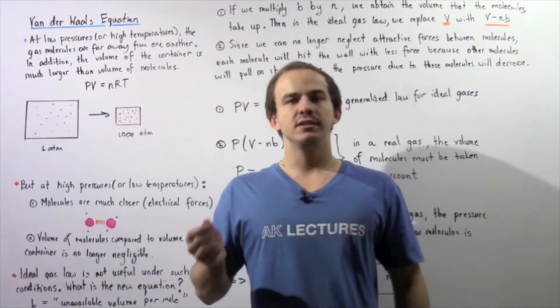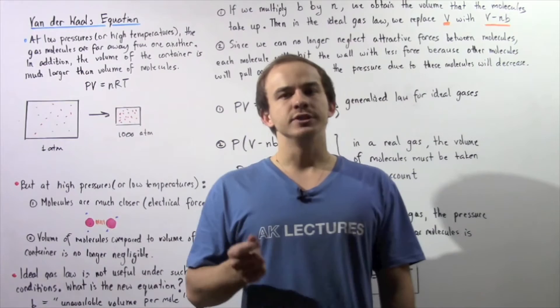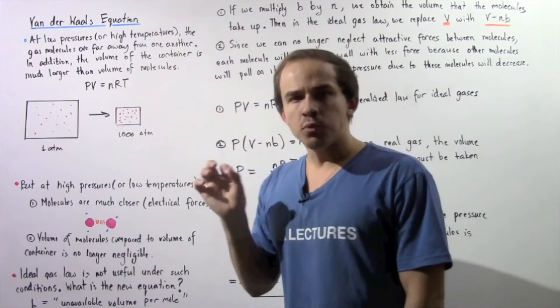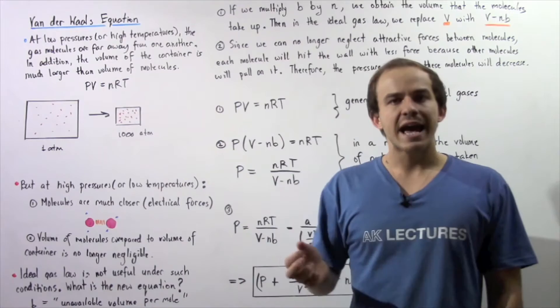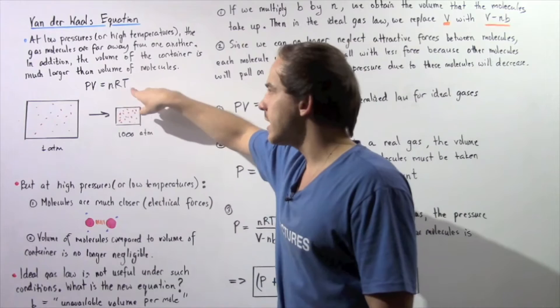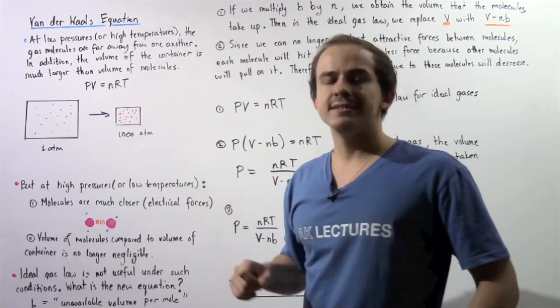Recall in our discussion of real gases, we said that we can use the ideal gas law to help us describe the way that real gases behave under certain conditions. At low pressures and at high temperatures, we can use the ideal gas law to help us describe and explain the way that our real gases behave. The equation is PV = nRT, where n is the number of moles of gas, R is the gas constant, and T is the temperature in Kelvin.